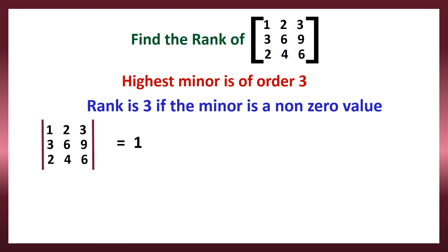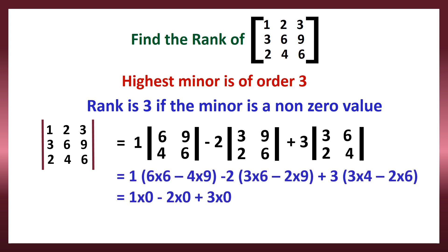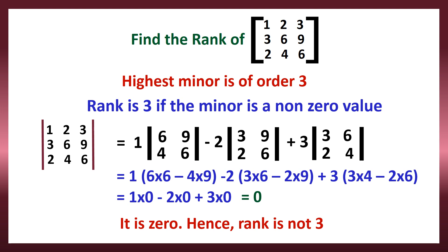The determinant of this matrix equals 1 × det[6,9;4,6] − 2 × det[3,9;2,6] + 3 × det[3,6;2,4], and we get the determinant value as 0. Since the determinant is 0, the rank is not 3. We have to check with the next rank, which is 2. It is confirmed that rank is not 3 because the determinant value is 0; any non-zero number, positive or negative, would have given rank 3.